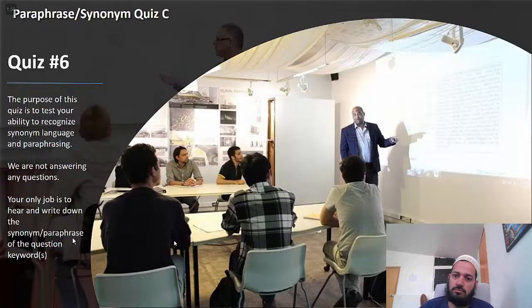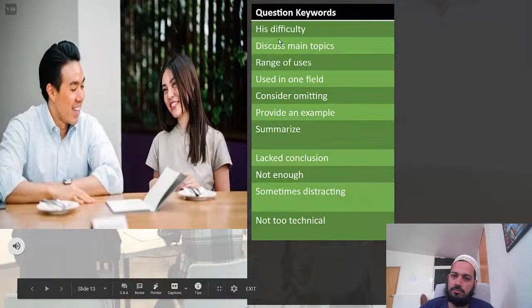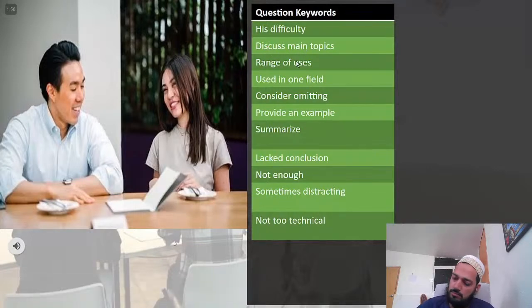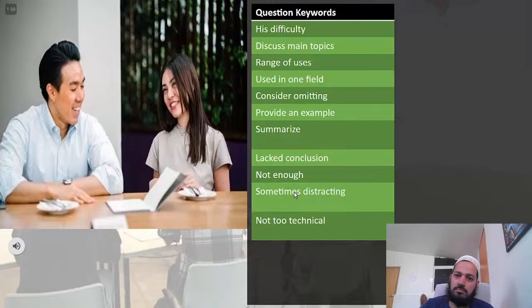The purpose of quiz six is to test your ability to recognize synonym language and paraphrasing. We are not answering any questions. Your only job is to hear and write down the synonym or paraphrase of the question keywords. The question keywords are: his difficulty, discuss main topics, range of uses, used in one field, consider omitting, provide an example, summarize, lacked conclusion, not enough, sometimes distracting, and not too technical. Write these on the left side of your table if you need to, and on the right write down the paraphrasing and synonyms you hear.